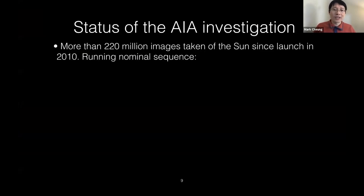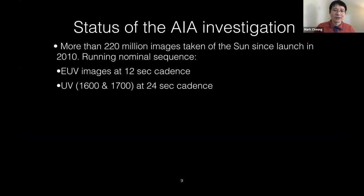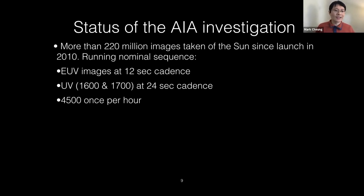We've taken more than 220 million images of the sun with AIA since launch. The nominal sequence is extreme ultraviolet images at 12-second cadence, and the UV channels at 24-second cadence. There is a 4500 Ångström image taken once an hour, but for many years — because of what we think are pinholes in the front entrance filter — the image quality due to scattered light in the 4500 channel is not good and not useful for science.